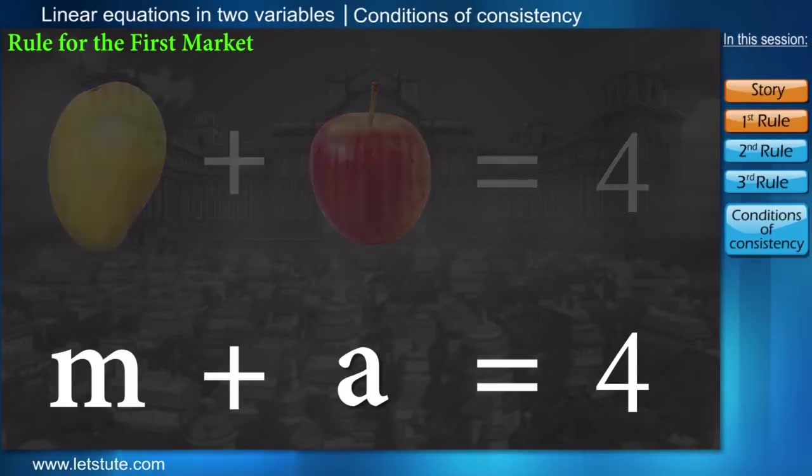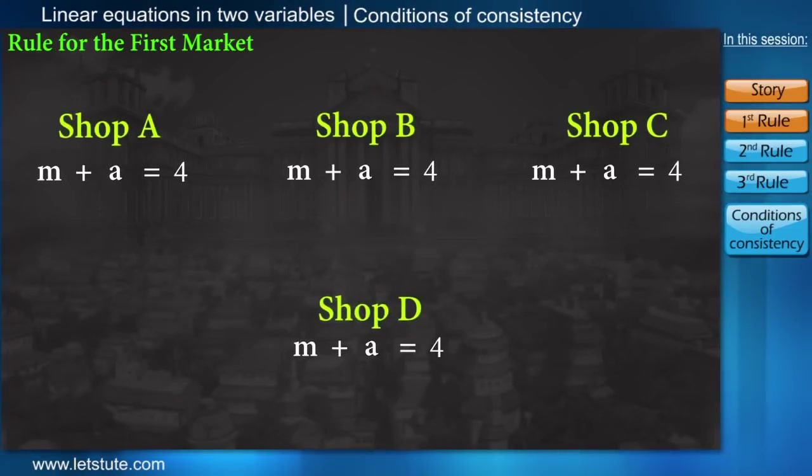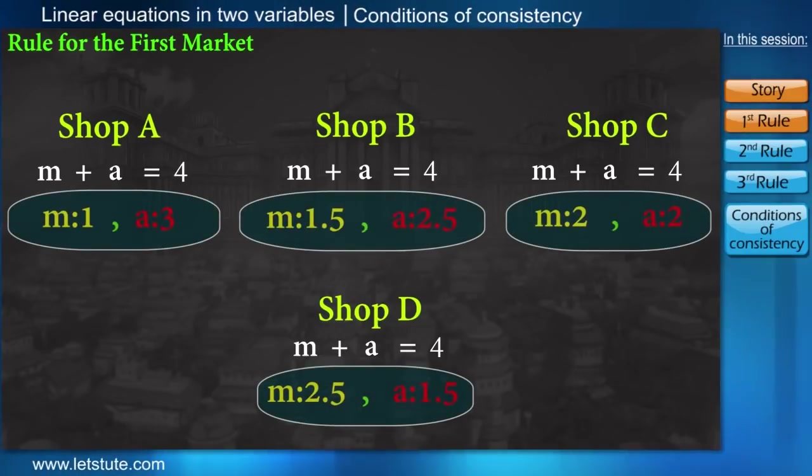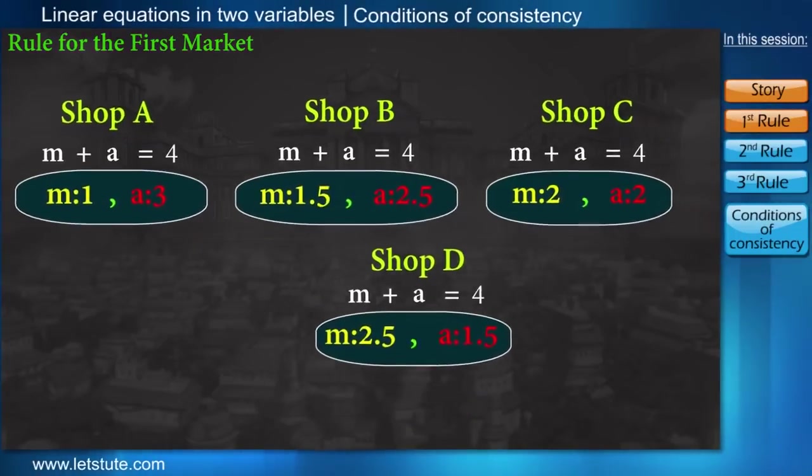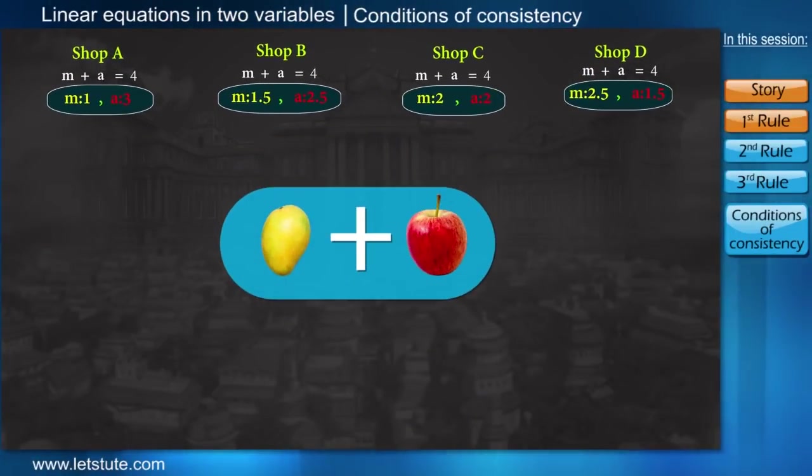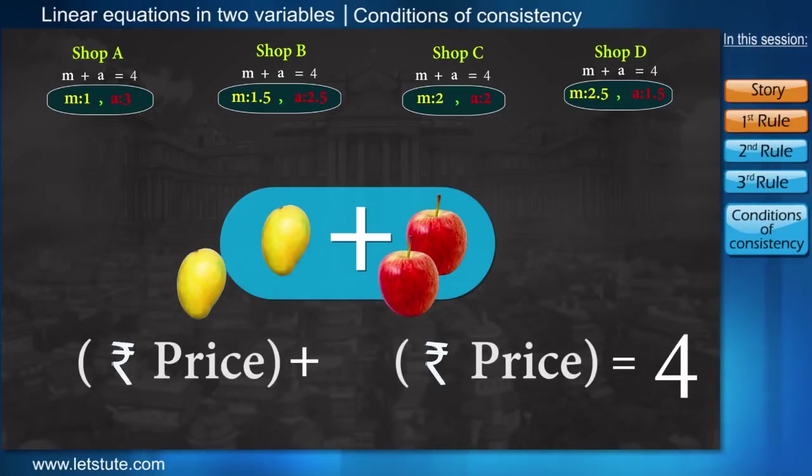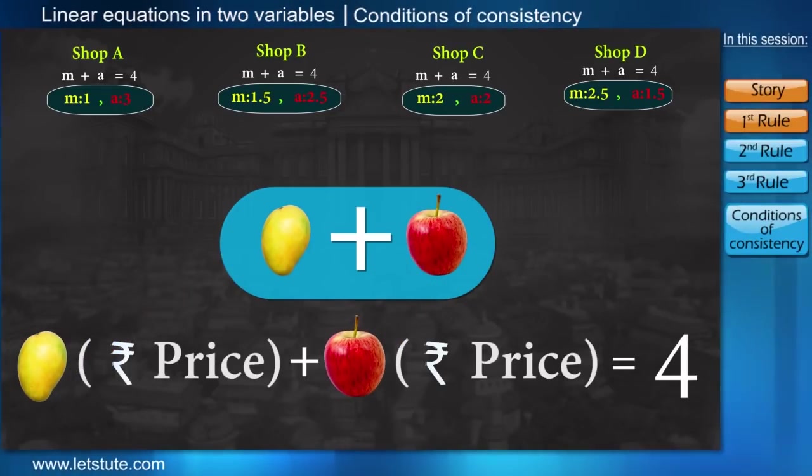Keeping this criterion in mind, four sellers put their shop in the first market. And the prices were displayed. It was not a compulsion for the sellers to always sell the fruits in pairs. One can sell individual fruit at their individual prices, but the pricing should satisfy the criteria.